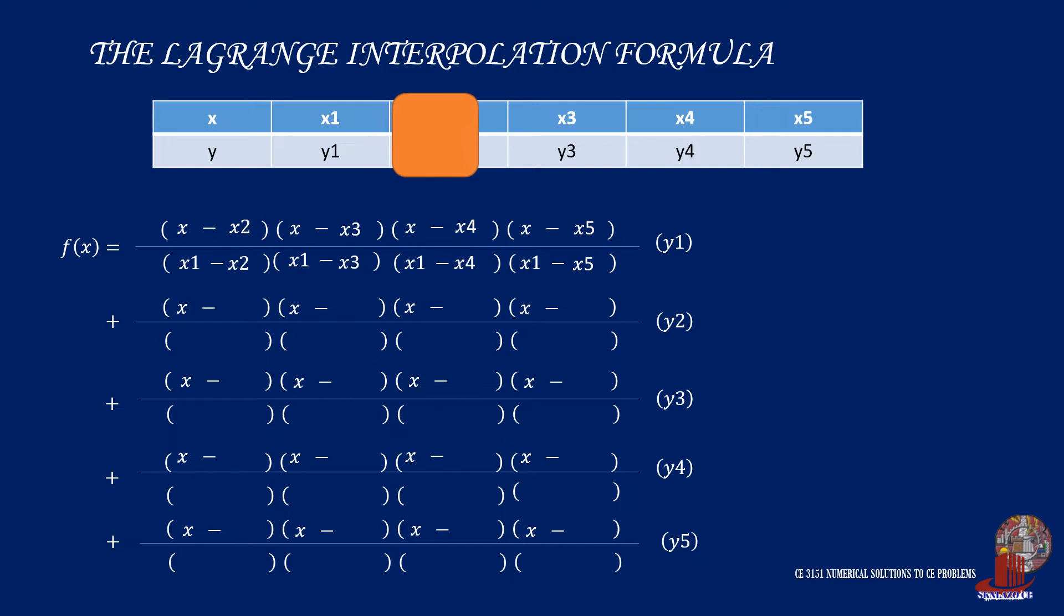The isolation of the second data point is used in the second term. The disregarded x2 will be the first term in each quantity in the denominator. Just as we completed the first term, we subtract the remaining x values in the numerator—that is from x1, then we jump to x3, then x4, and x5. And again, these values will be reflected just the same in the denominator.